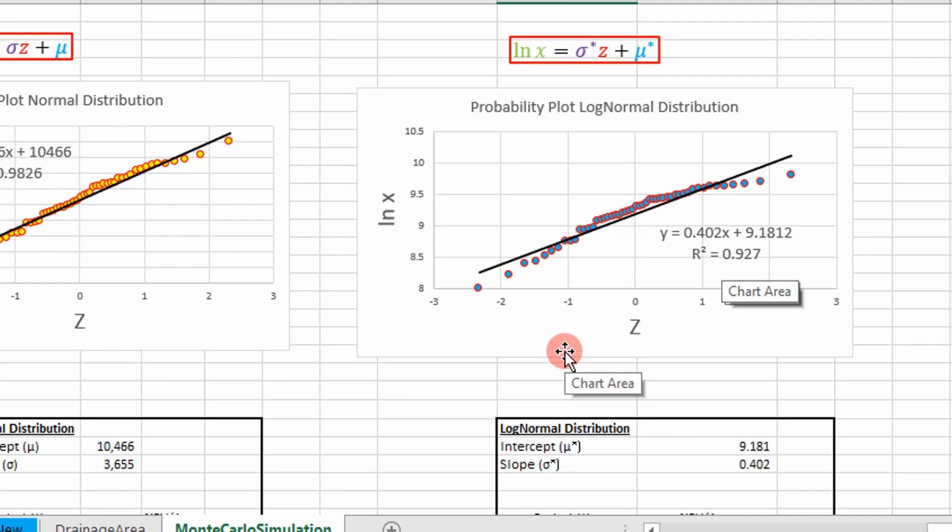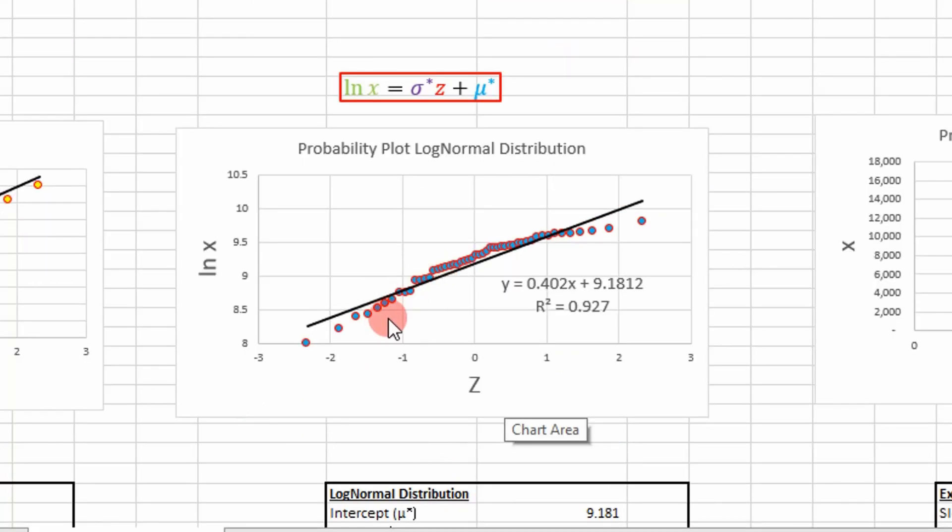So that's how you mathematically model your data with a log normal distribution. One advantage of the log normal distribution over our normal and uniform distributions is that we won't get negative values. And that's kind of one of those things, as an engineer, why you'd want to use this plot.